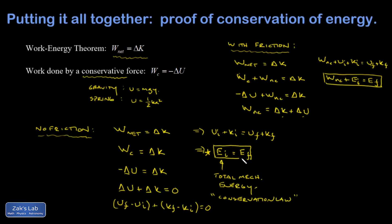Now we'll get into problem solving with this conservation law. Energy methods are very powerful because they allow you to skip all the details of the path of an object, since these are path-independent forces. However, the weakness of this method is that we're always comparing only an initial state to a final state and don't get all the details in between — so there is a trade-off.